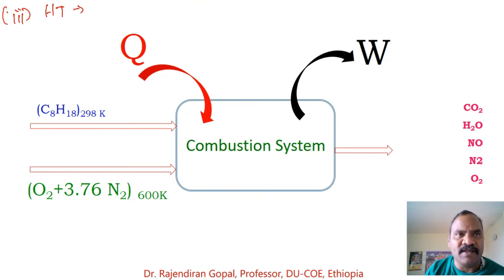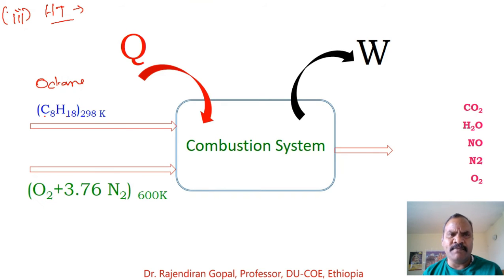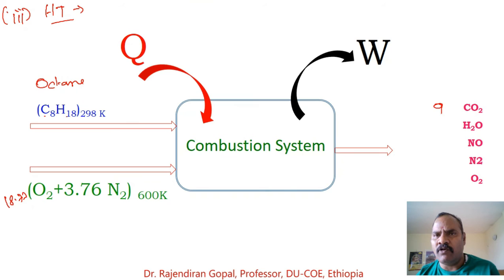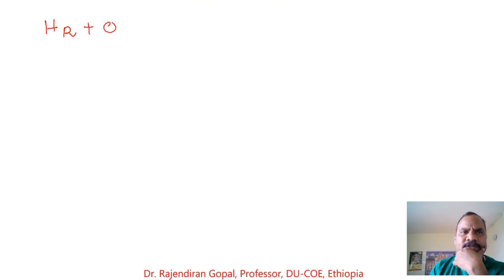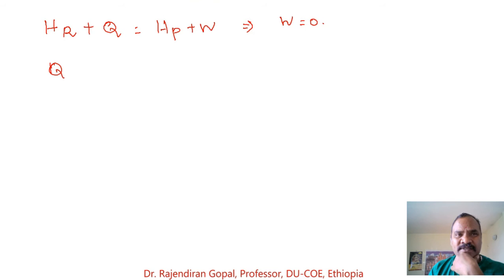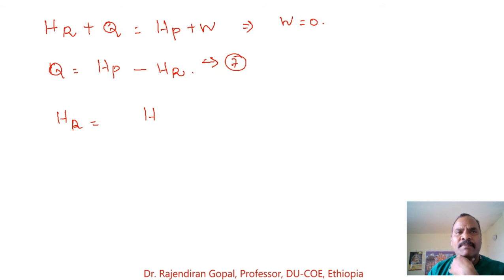For the third part, we calculate the heat transfer from the combustion system. Octane C8H18 at 298 Kelvin and 18.77 kilomoles of air at 600 Kelvin enter the combustion system, producing 8 kmol CO2, 9 kmol H2O, 0.227 kmol NO, 70.4565 kmol N2, and 6.1565 kmol O2. Applying the steady-flow energy equation: H_reactants + Q = H_products + W. Since no work is done, Q = H_products − H_reactants.